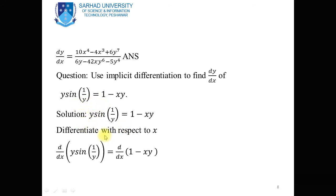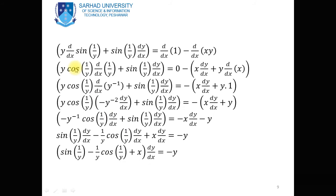Taking the derivative with respect to x of y·sin(1/y) = 1 − xy. We use the product rule on the left-hand side and also on the right-hand side. For the left: first derivative of second plus second derivative of first. First function is y, second function is sin(1/y). On the right: derivative of 1 minus derivative of x·y. Derivative of sin is cos(θ), where 1/y is the angle, so we need derivative of 1/y with respect to x.